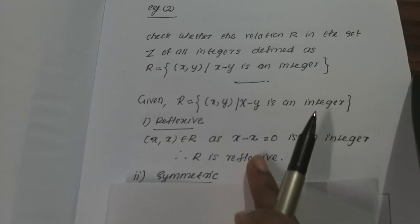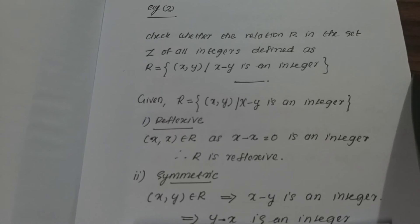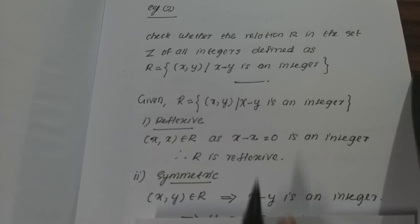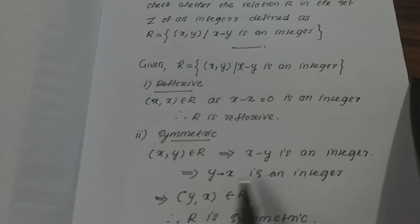Now let's check symmetric. If (x, y) belongs to R, then x minus y is an integer. We know that y minus x is also an integer — it's just a sign change. For example, 5 minus 6 = -1 and 6 minus 5 = 1, both integers. So (y, x) belongs to R. Therefore R is symmetric.